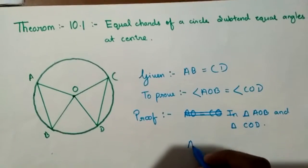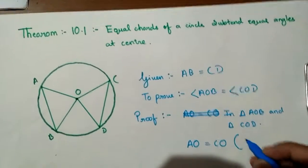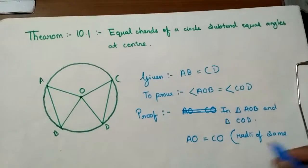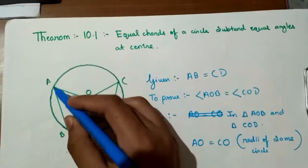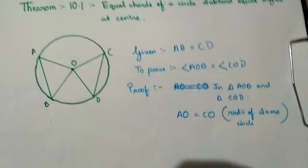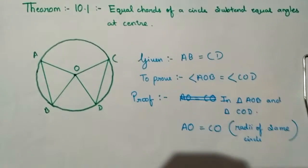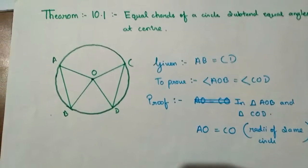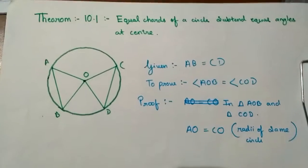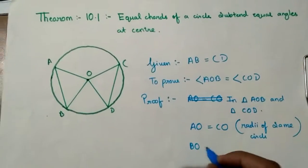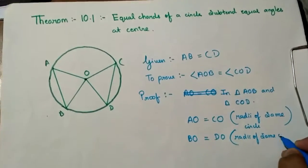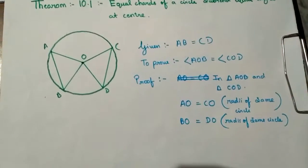In triangle AOB and triangle COD: AO is equal to CO — reason: radii of the same circle. Similarly, BO is equal to DO — reason: radii of the same circle. All of AO, BO, CO, and DO are radii of this circle, so they are always equal. Thus two sides are proved equal.